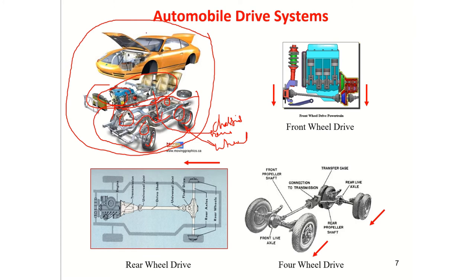When we talk about vehicle aerodynamics, we focus more on the body and its shape. When talking about the powertrain, our focus is on the powertrain region. When we talk about vehicle dynamics, our focus is on the chassis system — many people also call it chassis dynamics. This is how we divide the automobile into three main parts.